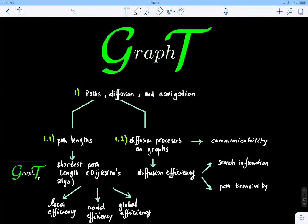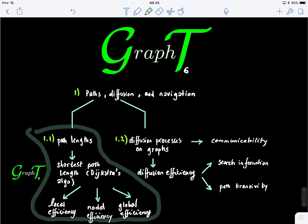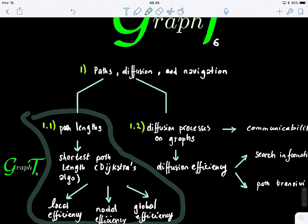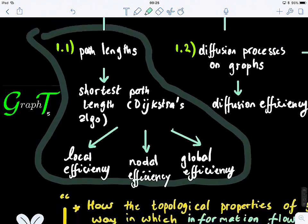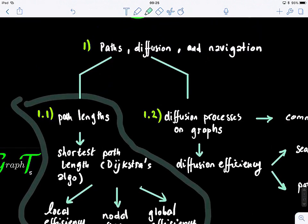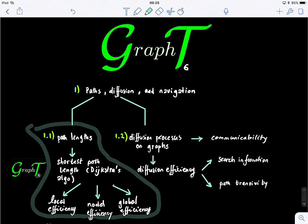Welcome to lecture six. If you recall what we covered in the previous lecture, we covered path lengths, the shortest path model, and we looked at how to compute the efficiency of information flow on a graph through three different measures: local efficiency, nodal, and global efficiency, and also other metrics such as the harmonic mean and the characteristic path length. This was in lecture five.